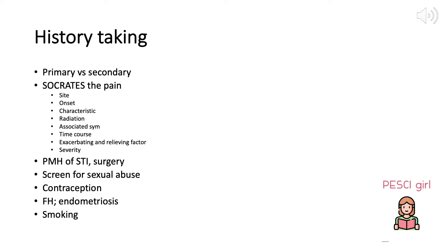In past medical history, we ask about any possibility of STI, any history of sexually transmitted infection, any surgery, other problems, parity, prior pregnancy, or C-section. It is really important to screen for sexual abuse in this kind of patient. You can start by saying: 'In most patients that come with this symptom, I ask whether they have ever been hurt or touched in a way they didn't want. Has this ever happened to you, or has anyone ever forced you to have sex?'